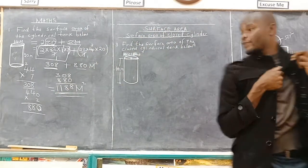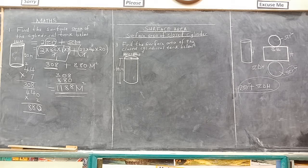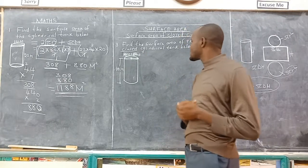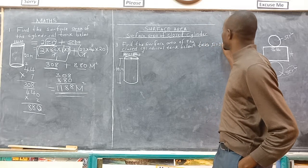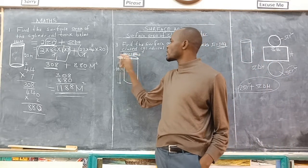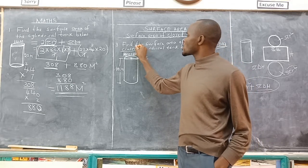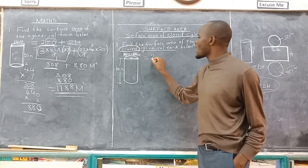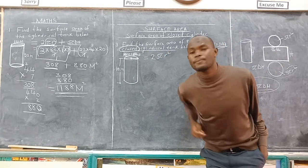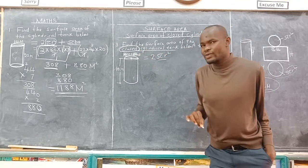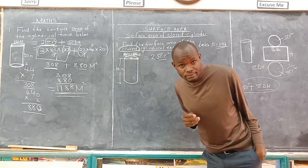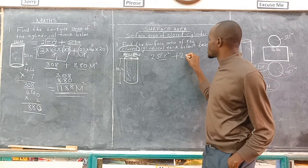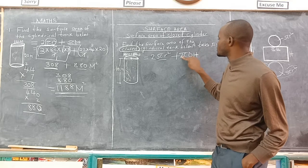The next question: Find the surface area of the closed cylindrical tank below. Take pi as 3.14. You can't simplify this one with 7. What is the formula for calculating the surface area of a closed cylinder? We add 2 circles because it is closed, so we add 2 pi r squared. The area of one circle is pi r squared, and there are 2. Plus the area of the curved surface, which is pi times diameter times height. So let us substitute. We change 3.14 as the fraction 314 over 100.